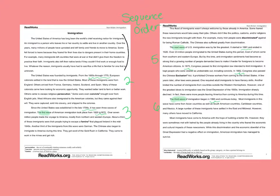We know that paragraph one is giving us information about what immigration or what an immigrant is, and giving us some reasons why — leaving because they feared for their lives with dangers, left countries that were at war, left lands because they couldn't find enough work or food. So this gives us a little bit more of a description.